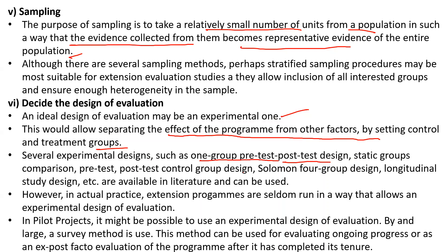Sixth, decide the design of evaluation. An ideal design for evaluation may be an experimental one, which would allow separating the effect of the program from other factors by setting up control and treatment groups. Several experimental designs exist, such as one-group pre-test post-test design and statistical group designs. In actual practice, extension programs are seldom run in a way that allows an experimental design, but in pilot projects it may be possible.